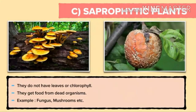Third type: saprophytic plants. Sapro means dead matter. These plants grow on dead and decaying matter. They do not have leaves or chlorophyll. They get food from dead organisms. Examples include fungus, mushroom, etc. You can see this fungus in the picture.